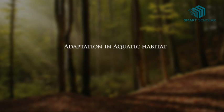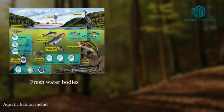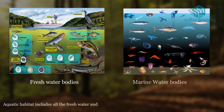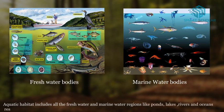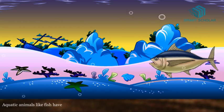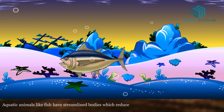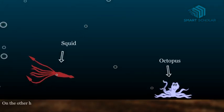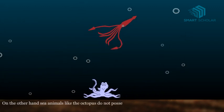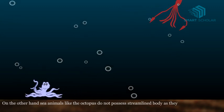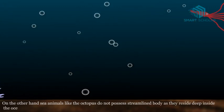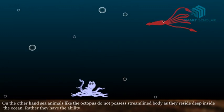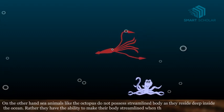Adaptation in Aquatic Habitat. Aquatic habitat includes all the fresh water and marine water regions like ponds, lakes, rivers and oceans. Aquatic animals like fish have streamlined bodies which reduce friction and allow them to move in water. Sea animals like the octopus do not possess streamlined bodies as they reside deep inside the ocean; rather, they have the ability to make their bodies streamlined when they move in water.